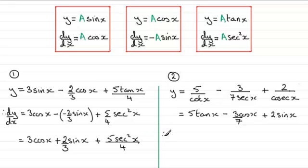Therefore, dy/dx equals—to differentiate 5 tan x we get 5 sec squared x. To differentiate minus 3/7 cos x, remember the differential of cos x is minus sine x, so we have minus 3/7 times minus sine x, which gives us plus 3/7 sine x.